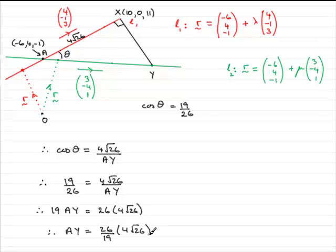And we're asked to give the distance AY to three significant figures. So if you do that, you should end up with AY equaling 27.910 and so on, which when rounded to three significant figures is 27.9.